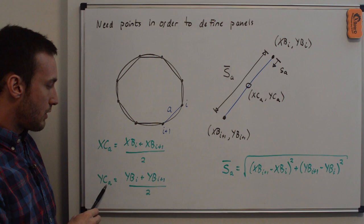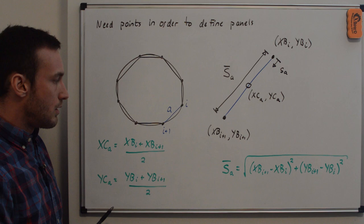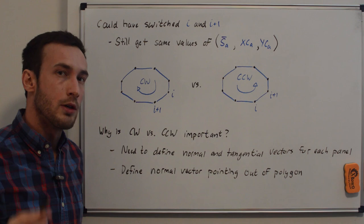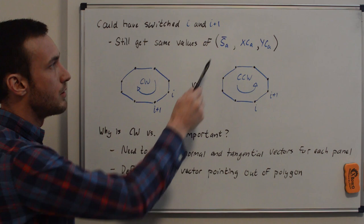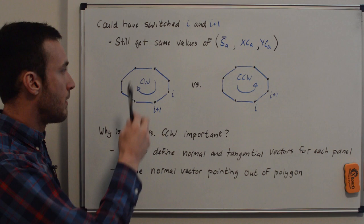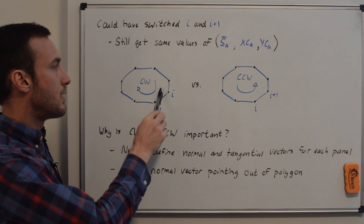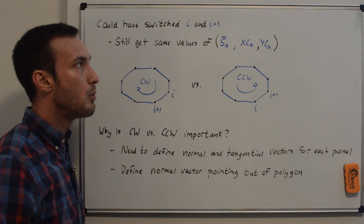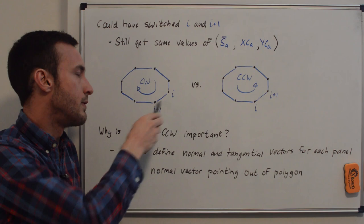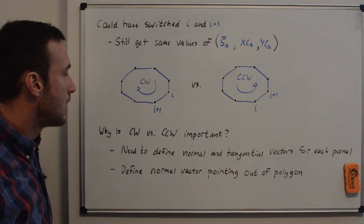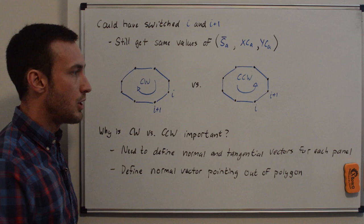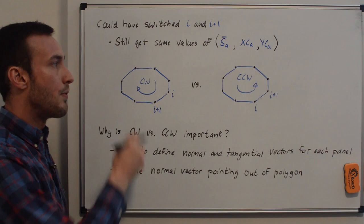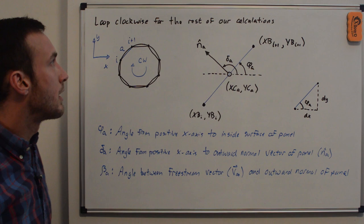We have two more variables to define. s̄A is the panel length between point i and i+1, and sA is the distance progress from point i to point i+1. Knowing the boundary point locations, we can compute the panel length and the position of the control point. You might have noticed we could have switched the i and i+1 locations and still gotten the same panel length and control point coordinates. However, we'll always be looping clockwise around the polygon. The direction matters because we need to define the normal and tangential vectors for each panel, and if we want the normal vectors to point out of the polygon, the direction we progress around is important.